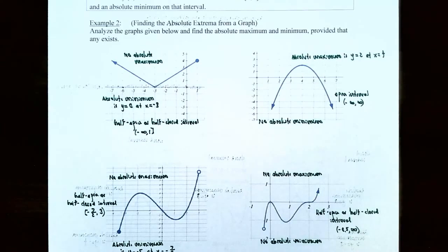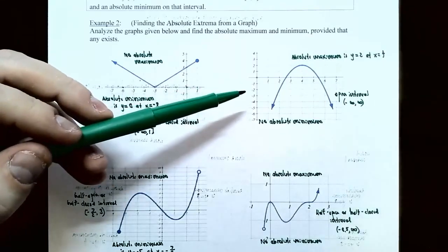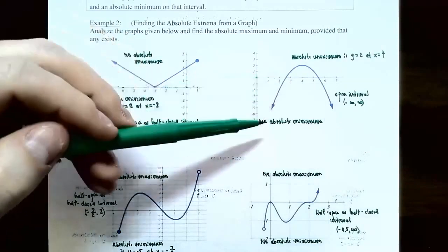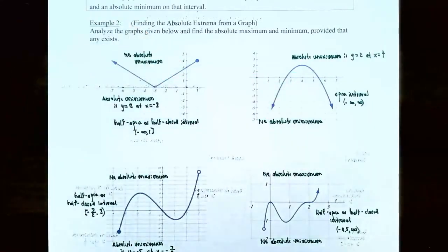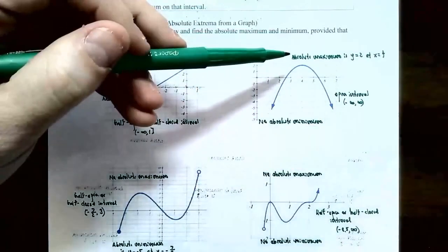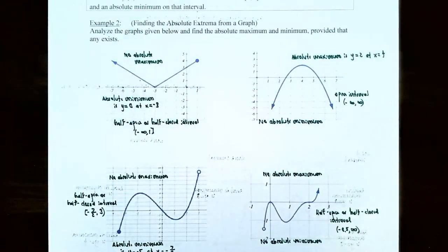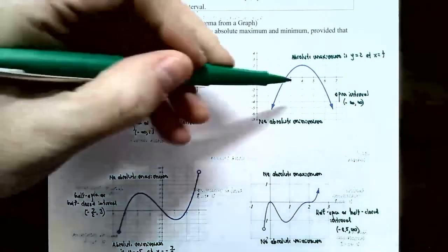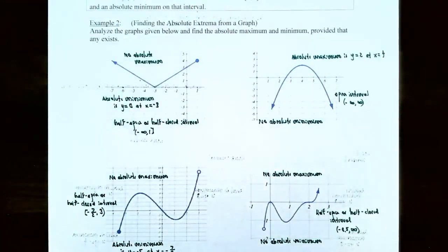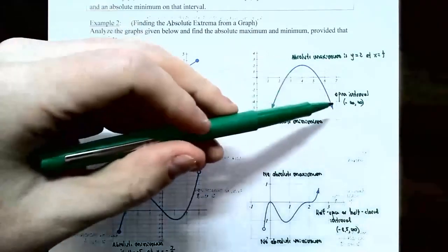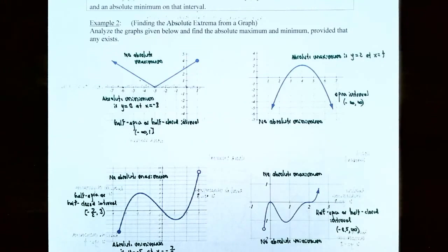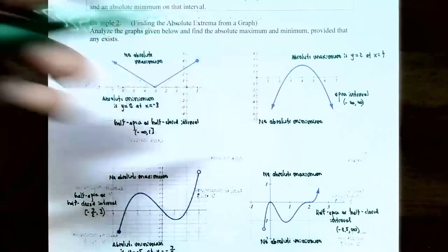The second graph continues to the left and down forever and to the right and down forever — an open interval from negative infinity to infinity. The absolute maximum is y equals 2 occurring at x equals 4, the largest y value for the entire graph. However, there is no absolute minimum because the graph continues downward in both directions. The Extreme Value Theorem guarantees both extrema only on a closed interval.